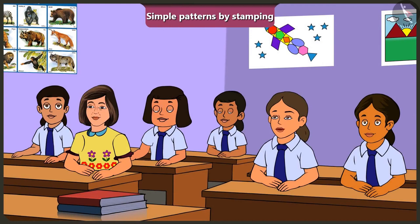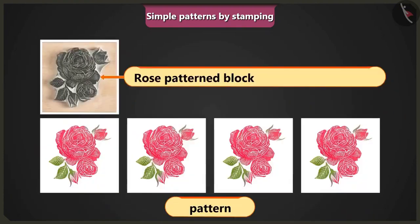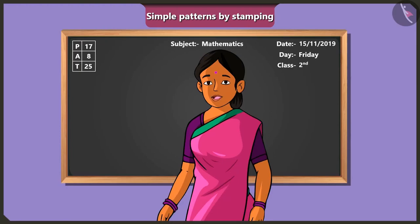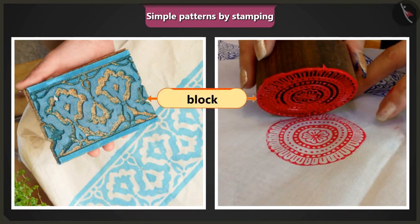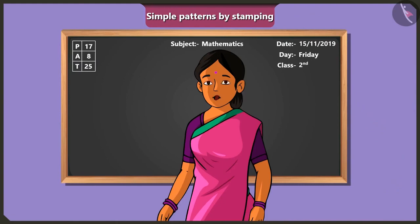Ma'am, can we make several patterns by using stamps like these? Yes, absolutely. Look — this is a block with the design of a rose flower, so we can make a pattern like this. This is very easy! It's simple to make patterns with a stamp. We can easily create different types of patterns by applying colour on a block or other objects. Ma'am, can we make patterns using stamps in our drawing books as well? Yes, children. Come, let me show you some pictures created by stamping and you have to tell me which objects were used as stamps.